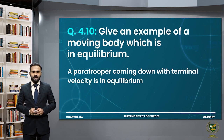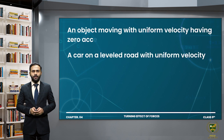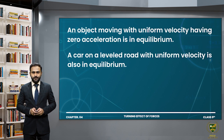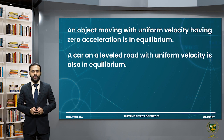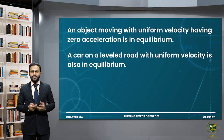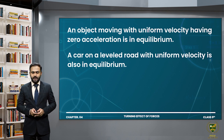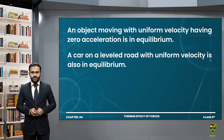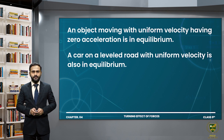Another example: an object moving with uniform velocity having zero acceleration is an example of equilibrium. A car moving with uniform velocity on a level road is an example of equilibrium — uniform velocity means zero acceleration, so the body is in equilibrium.